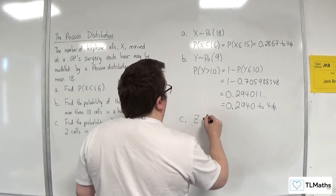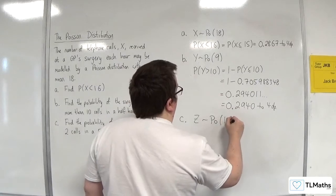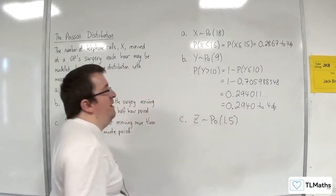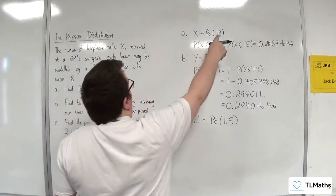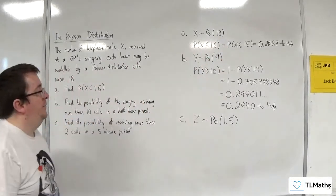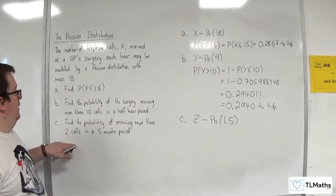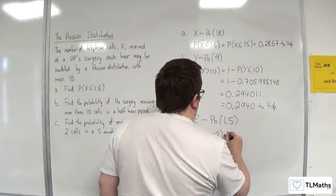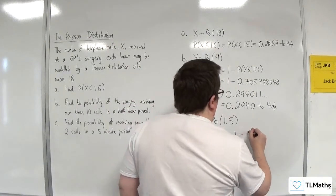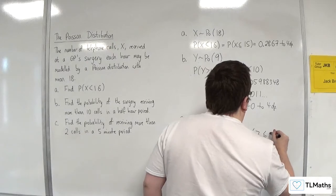So let's call this Z is a Poisson distribution. Now the average rate is 1.5. You could have gone straight from 18 divided by 12. Same thing. And I want more than 2. So the probability of Z being greater than 2 is 1 take away the probability of Z being less than or equal to 2.